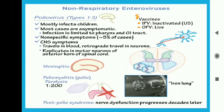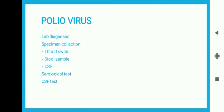There are two types of vaccines available: IPV (inactivated polio vaccine) and OPV (oral polio vaccine), which is a live vaccine.